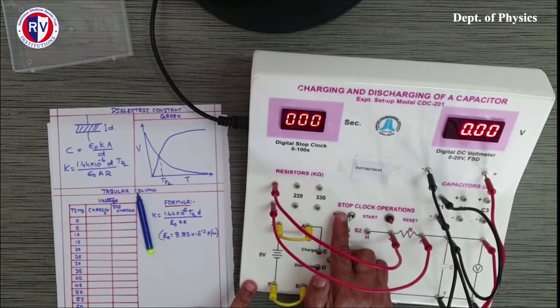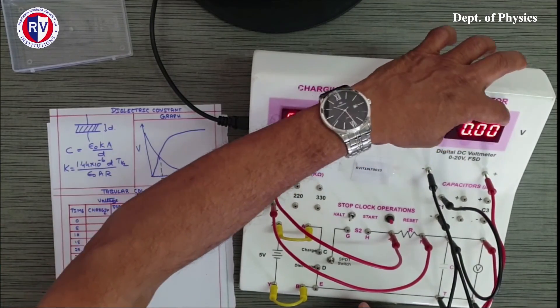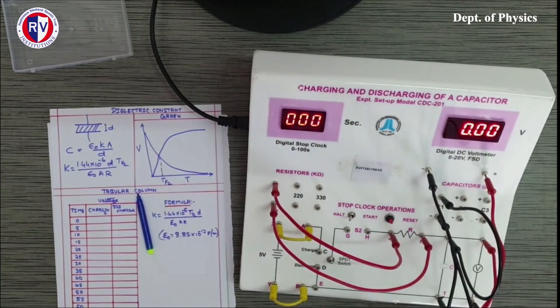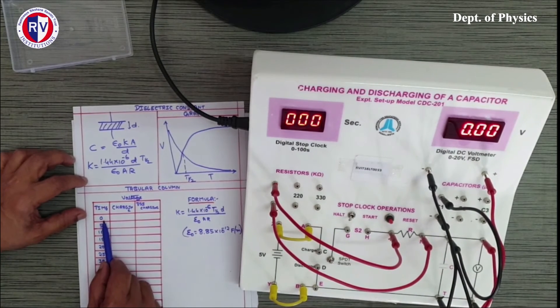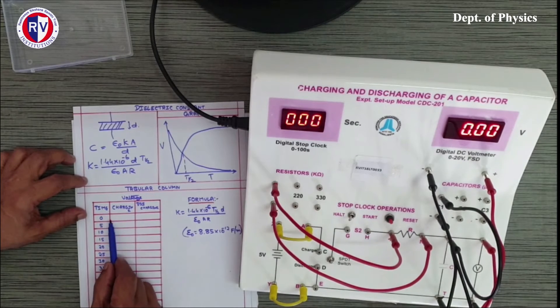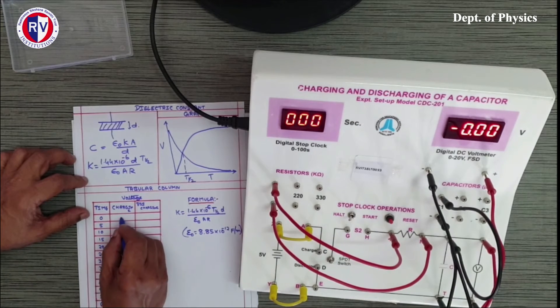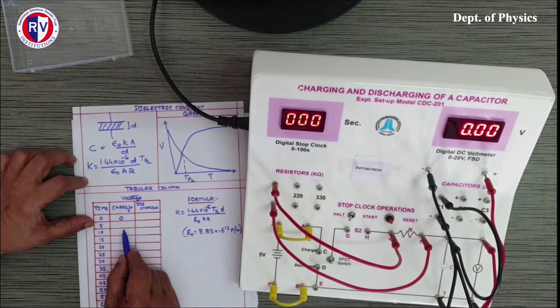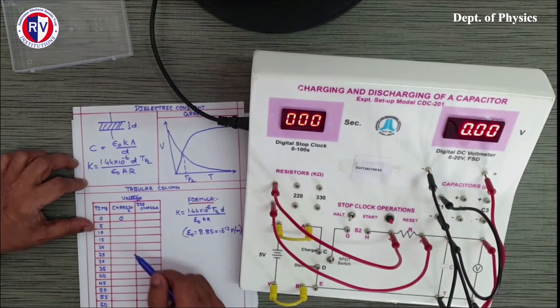If I start the switch, immediately the clock will start running and also the voltage increases. This voltage is the voltage across the capacitor. What we are going to do is, for every 5 second time gap, we will go on noting what is the voltage. For charging, we are starting from zero. After 5 seconds we will see what is the voltage, and initially the change will be very fast and afterwards gradually it comes down.